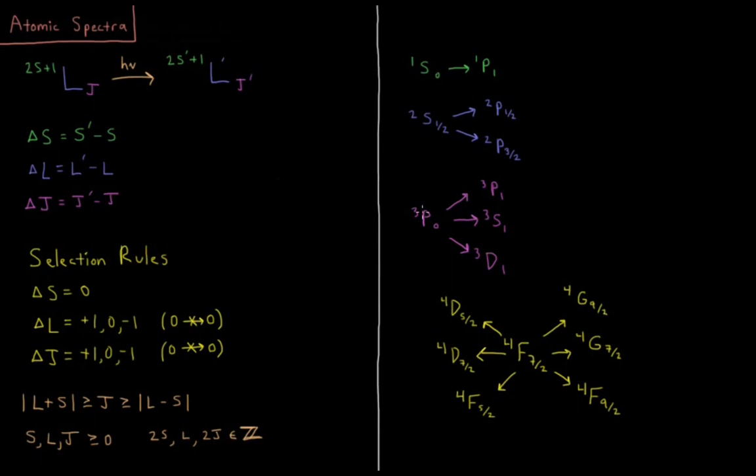For triplet p0, we could go to triplet p1, we could go to triplet s1, or we could go to triplet d1. So triplet d1 is an allowed term symbol, triplet s1 isn't allowed, we're not going from 0 to 0 again in j, and triplet p can also be triplet p1, so we could go to another triplet p1 state where delta s equals 0, delta l equals 0, but delta j is plus 1.